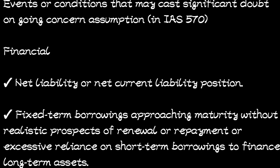We start with the financial indicators — things relating to money. The first one is a net liability or net current liability position. If the liability position of the business is not good, it shows that it may have problems, especially if they are carrying very many debts.